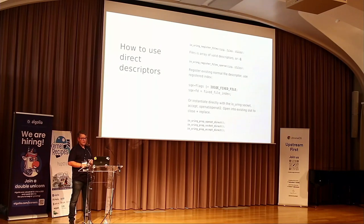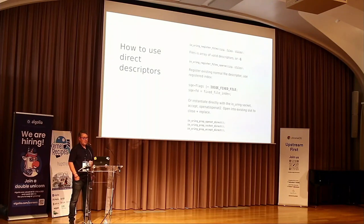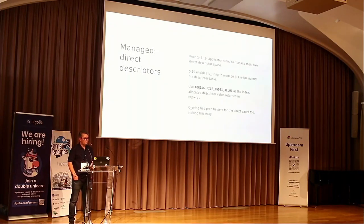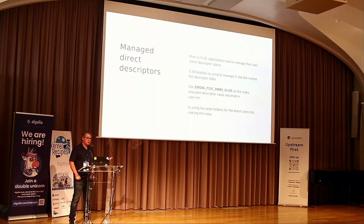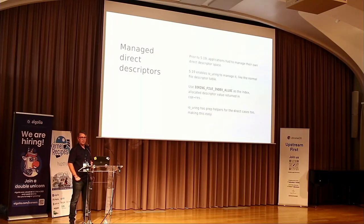You can also instantiate direct descriptors directly. The normal approach is to open a file and then register the file descriptor. But operations that instantiate file descriptors within io_uring — like accept — can produce a direct descriptor rather than a regular file descriptor, meaning you never even had a regular file descriptor; you keep everything within the ring. One of the most recent changes in 5.19 is managed file descriptors: instead of the application managing the space, io_uring manages it like regular file descriptors but with all the benefits of direct descriptors.